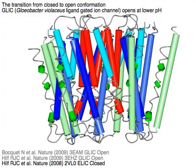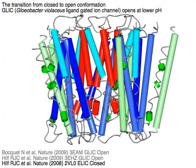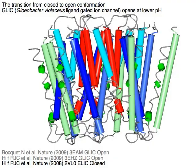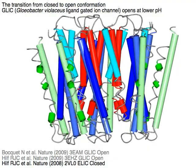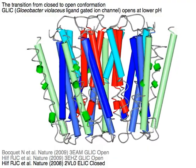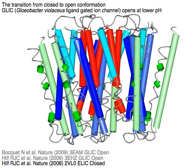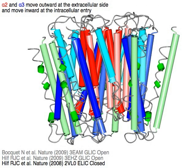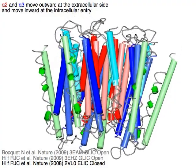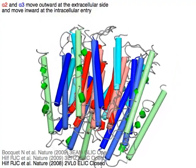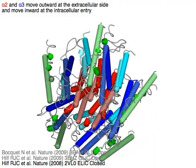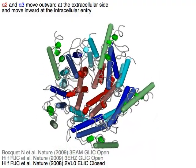The GLIC (Gloeobacter violaceus) yeast ligand-gated ion channel opens at lower pH. The transition from the closed conformation (shown in primary colors) to the open conformation (in light colors) shows red alpha 2 and blue alpha 3 moving outward at the extracellular side and inward at the intracellular entry.